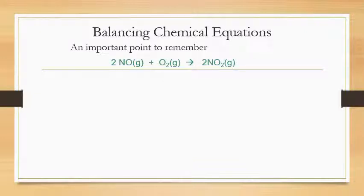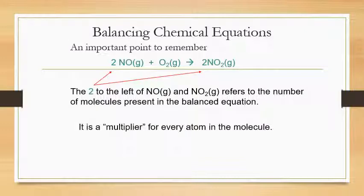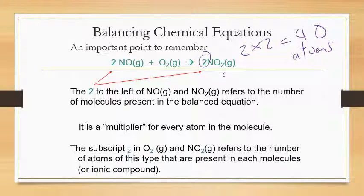The important point is that the coefficient 2 to the left of NO₂ means two molecules of nitrogen dioxide are present in the balanced equation — it's a multiplier for every atom in that molecule. So 2NO₂ means 2 × 2 = four oxygen atoms. The subscript in O₂ or NO₂ refers to the number of atoms of that type present in each molecule.